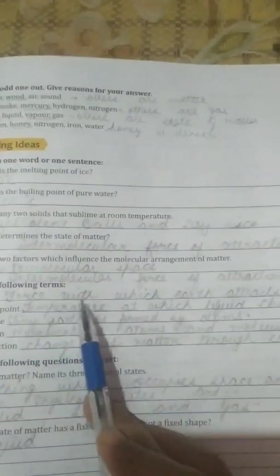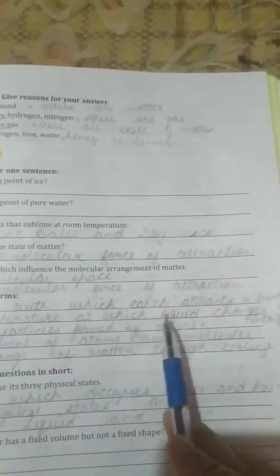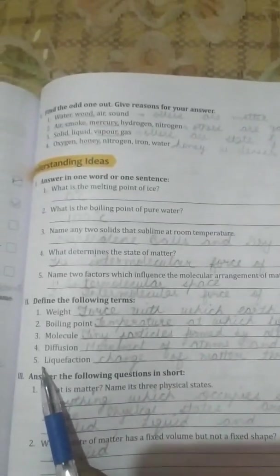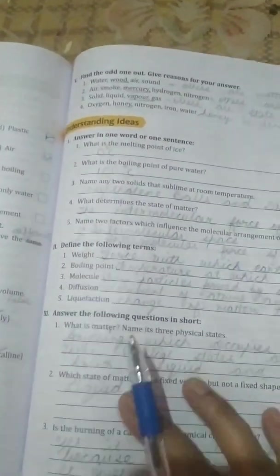Define the following terms. Weight is the force with which earth attracts a body. So this part also better you have to write in the book only. Second, boiling point, temperature at which liquid changes into gas. Molecules, tiny particles formed by atoms. Fourth, diffusion, movement of atoms and molecules. Fifth, liquefaction, changes of matter through cooling. So this part you have to write in the book only.